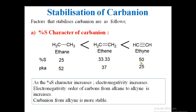For ethyne, the pKa value is 25, meaning it is the more acidic compound, and ethane is the least acidic. This acidity difference is due to the percentage of S character. As the percentage of S character increases, the electronegativity of the carbon atom increases. In ethyne, with 50% S character, its electronegativity is higher, so it withdraws electrons from the C–H bond, making the hydrogen more acidic and easily forming the carbanion.